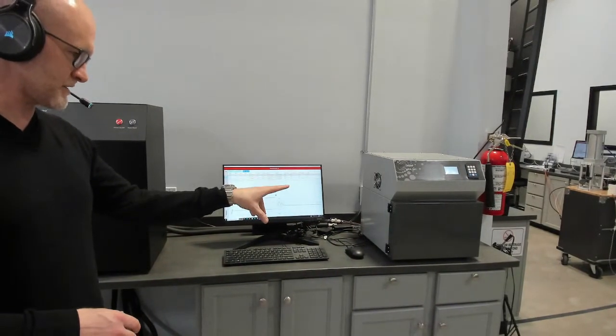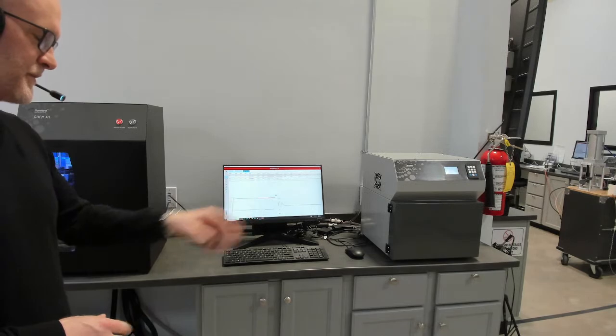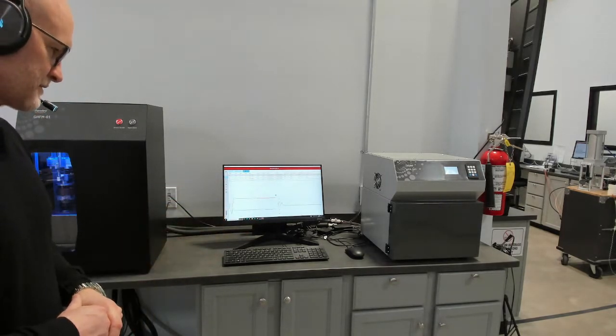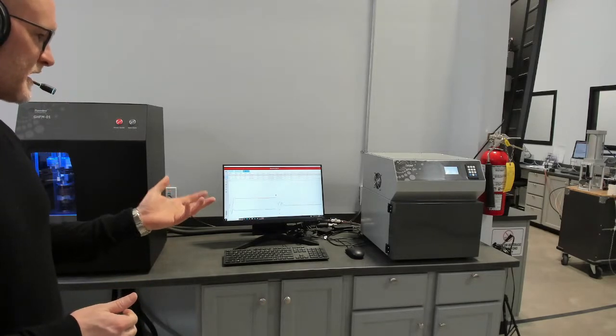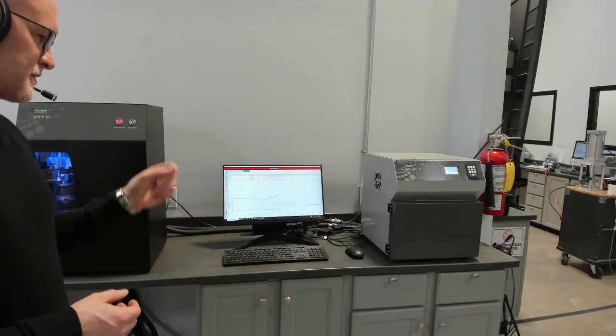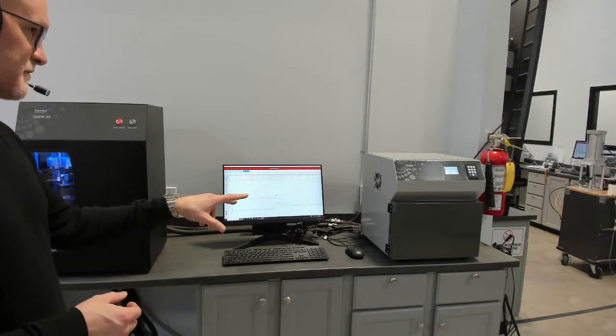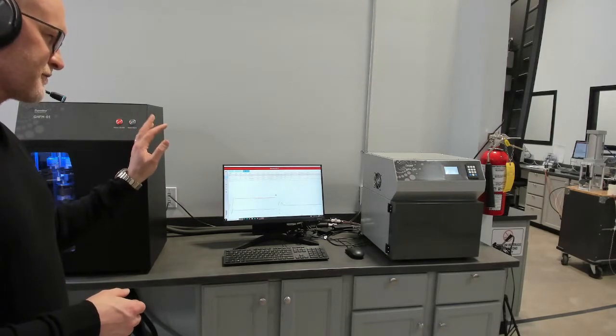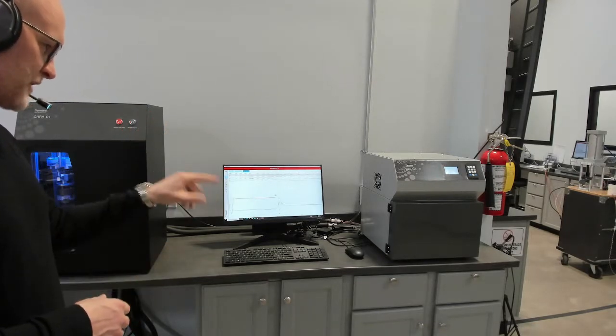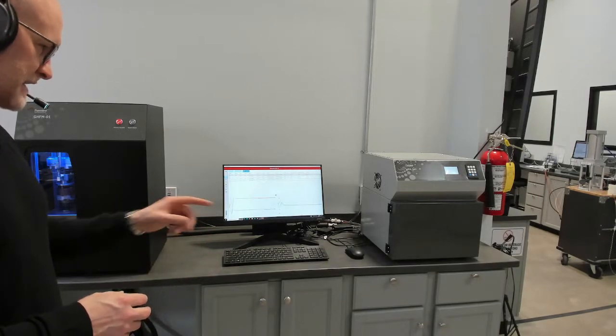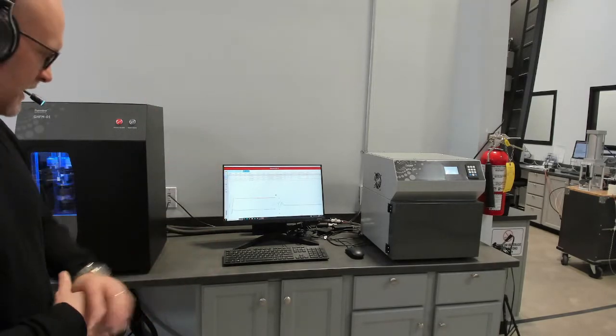This is our other steady state device which is heat flow meter. This follows ASTM C518 along with the other related ISO standards. This is for measuring heterogeneous insulation and construction materials. The thermal conductivity range of this method is 0.003 up to 0.5 watts per meter Kelvin and then there's an extended range thermal conductivity kit that you can plug into it to go up to two and a half watts per meter Kelvin.